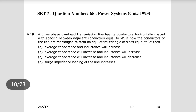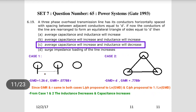In the overhead transmission line rearranged from horizontal spacing to equilateral triangle of side D, only the GMD changes. Since inductance is proportional to log(GMD) and capacitance is proportional to 1/log(GMD), and GMD decreases from 1.26D to D, we conclude the inductance value will decrease and the capacitance value will increase.